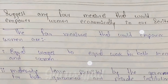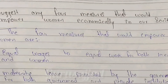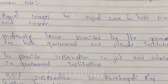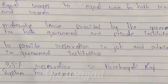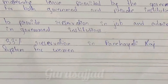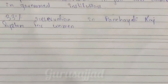Suggest any four measures that would empower women economically in society. First, equal wages for equal work for both men and women. Second, maternity leave provided by the government for both government and private institutions so women can recover and return to their jobs. Third, reservation in jobs and admissions in government institutions. Fourth, women should have 33% reservation in the Panchayati Raj system.